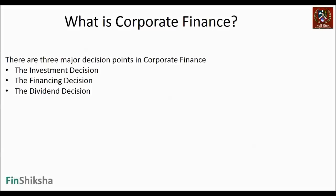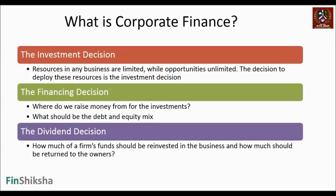Major decision points — all kinds of decisions that a firm takes would primarily fall under three major categories: the investment decision, the financing decision, and the dividend decision. These three decision points basically form the bulk of what we're going to study around corporate finance.